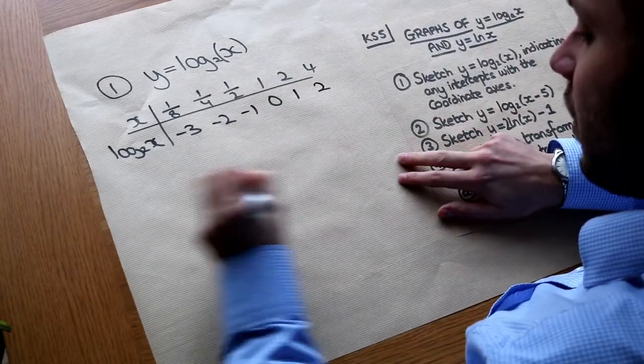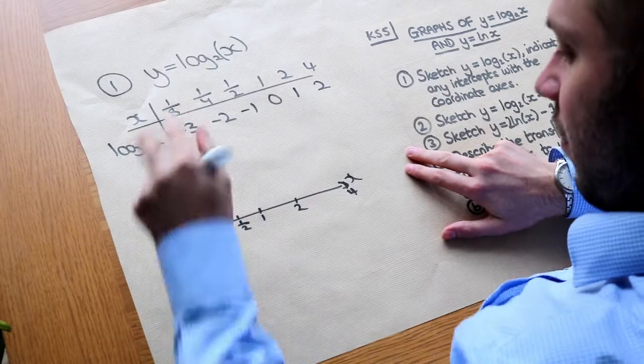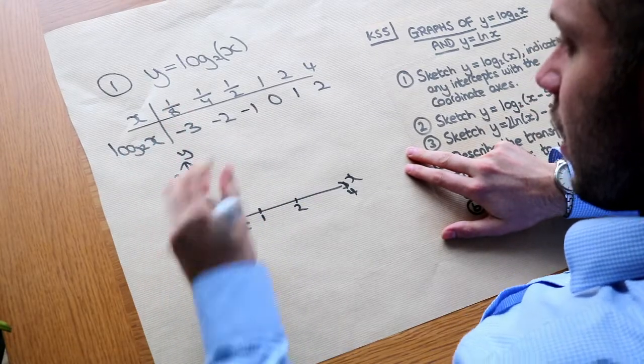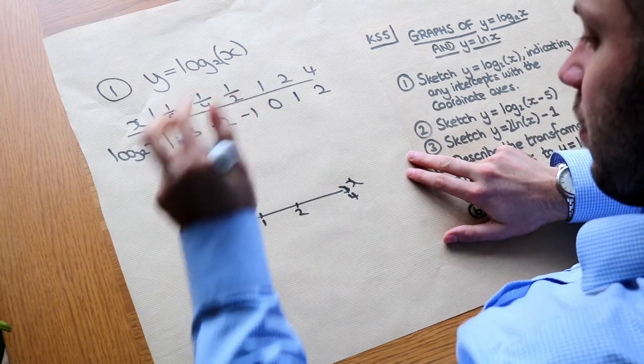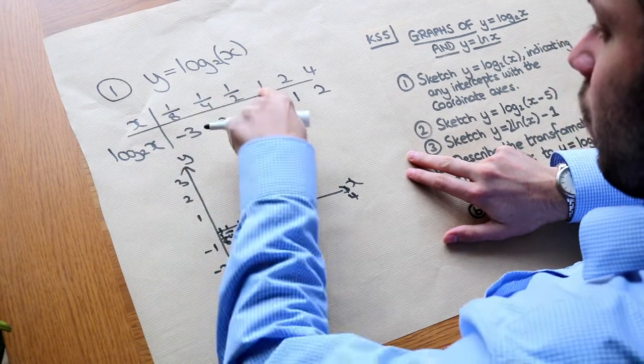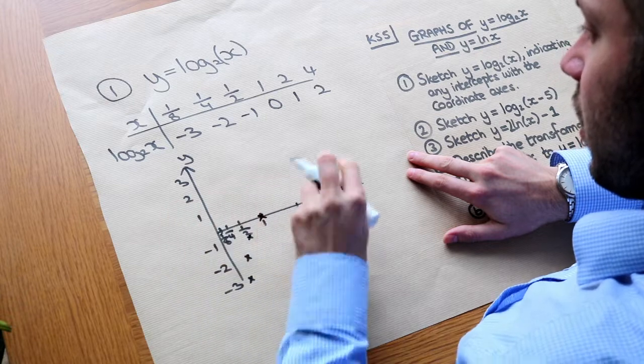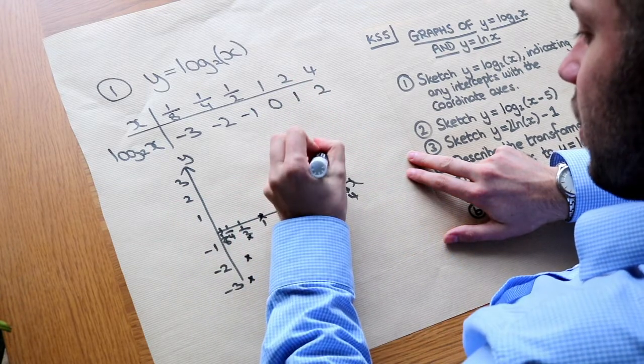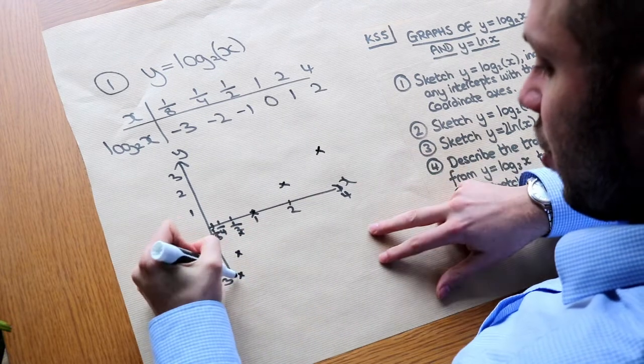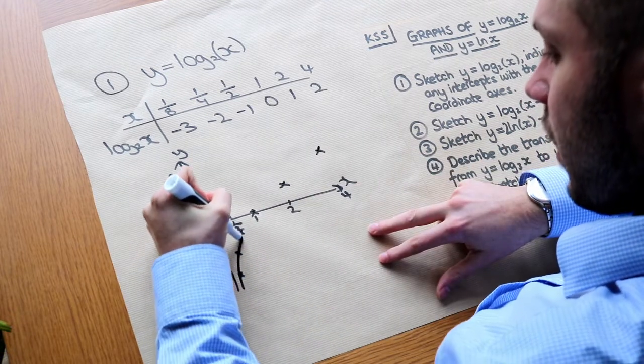And then let's just plot all of these. So we said an eighth minus 3 which is down here, a quarter minus 2 which is here, half minus 1 which is here, 1, 0 which is here, 2, 1 which is here, and 4, 2 which is here. And we can see that the shape is like this.